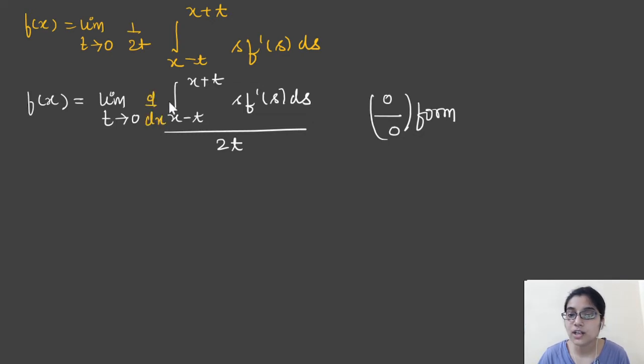We will differentiate numerator and denominator, and here is the mistake you people do. That is why I gave this question. According to L'Hôpital's rule, with respect to the variable you are applying the limit, you are going to differentiate with respect to that variable only. d by dt you have to do because you are applying the limit for t, not with respect to x. That is why most of you are not getting the answer, because you are applying the limit with respect to t but differentiating with respect to x. That is the blunder you are doing.